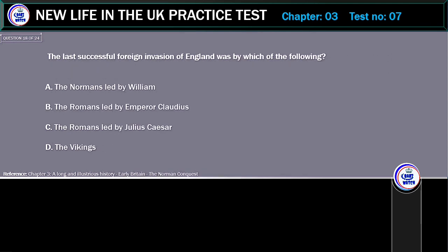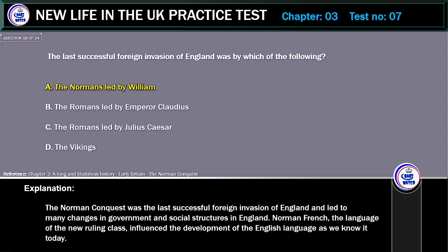The last successful foreign invasion of England was by which of the following? A. The Normans led by William. B. The Romans led by Emperor Claudius. C. The Romans led by Julius Caesar. D. The Vikings. Correct answer: The Normans led by William. Explanation: The Norman conquest was the last successful foreign invasion of England and led to many changes in government and social structures in England.